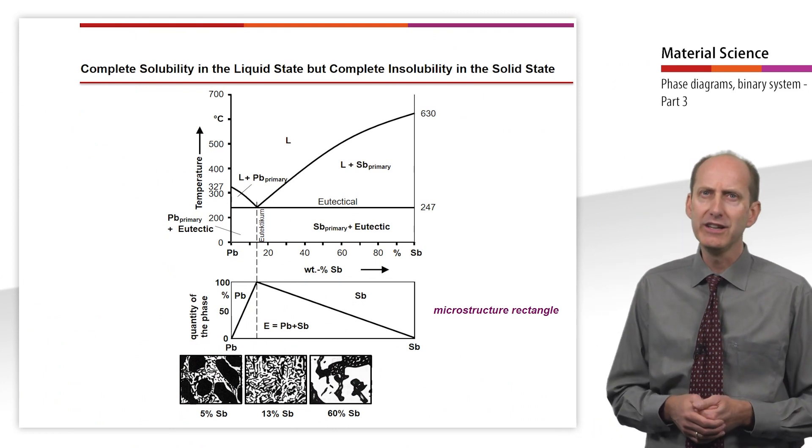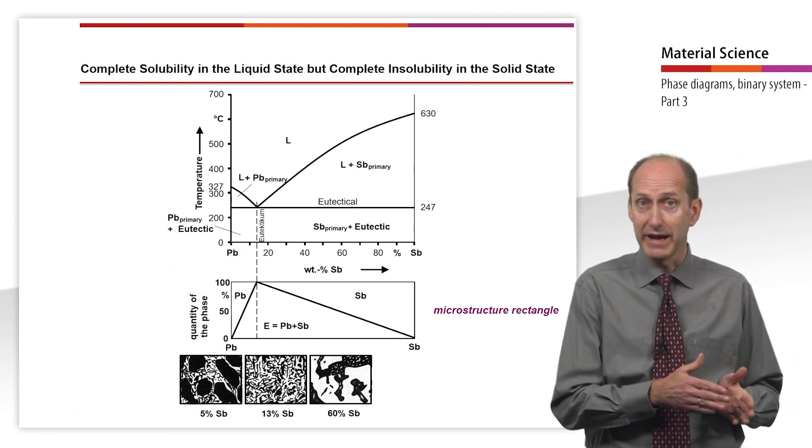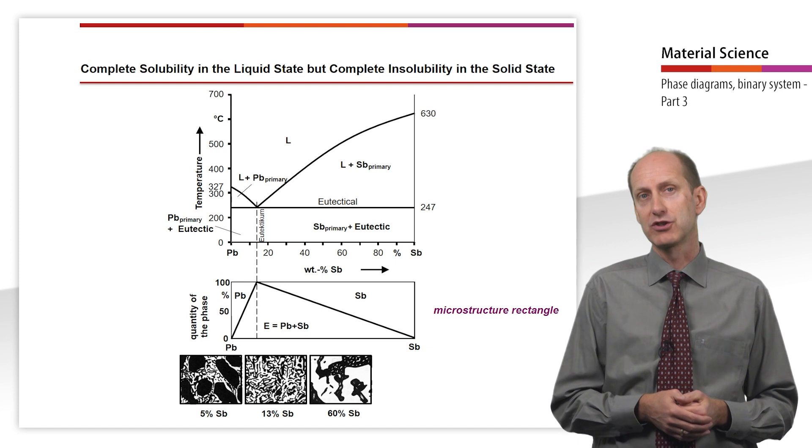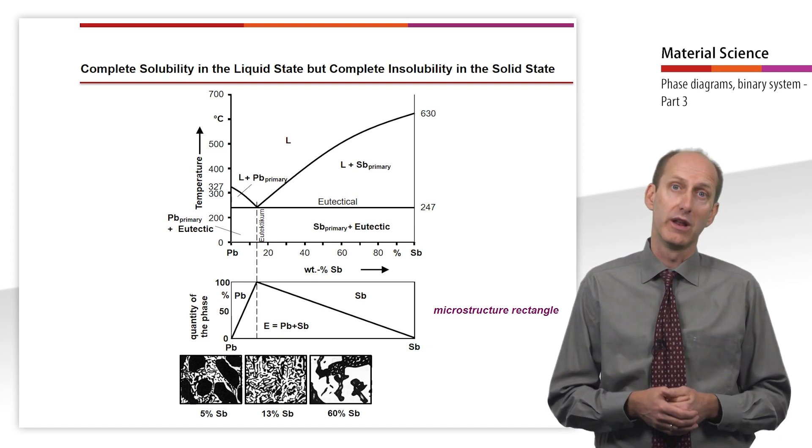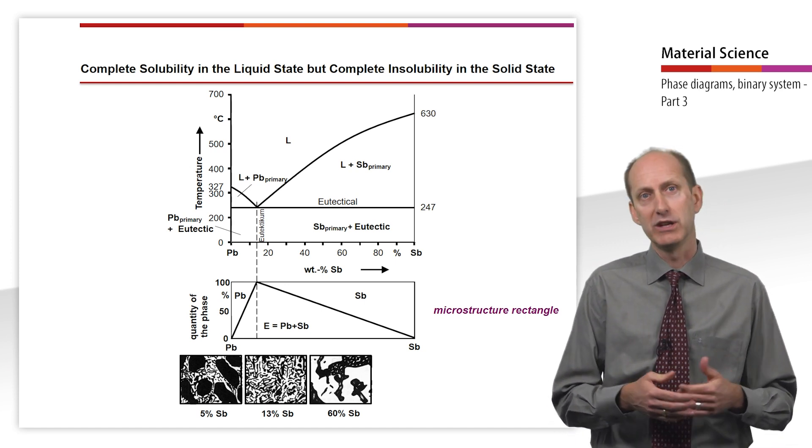The micrographs clearly show the lamellar, black and white striped structure of the eutectic, where the melt appears black and antimony appears white.